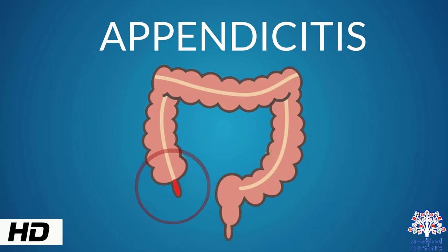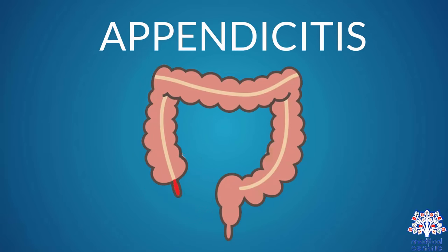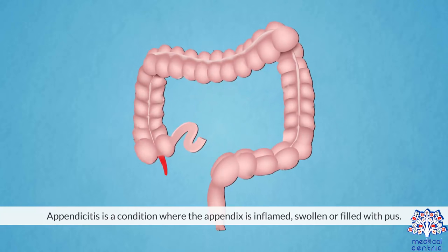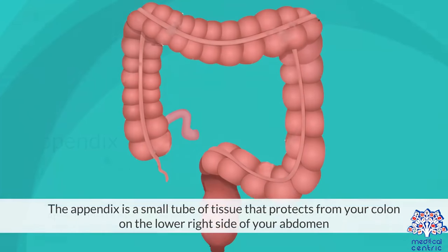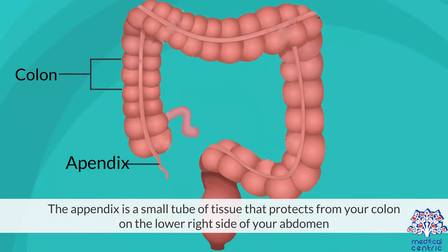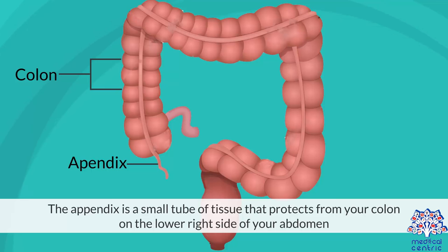Today's topic is appendicitis. Appendicitis is a condition where the appendix is inflamed, swollen, or filled with pus. The appendix is a small tube of tissue that projects from your colon on the lower right side of your abdomen.